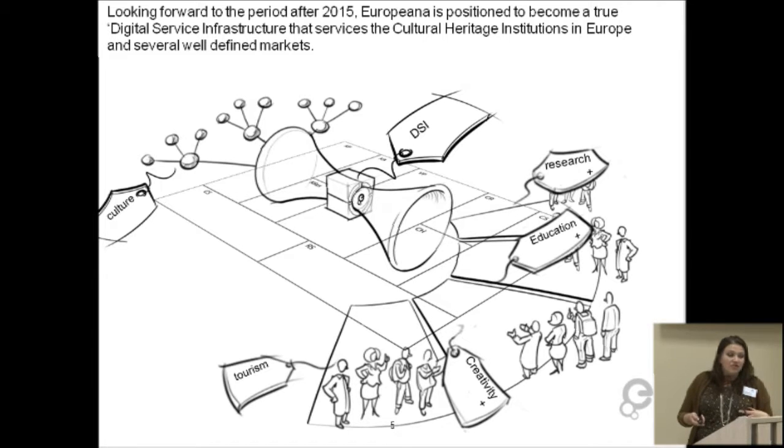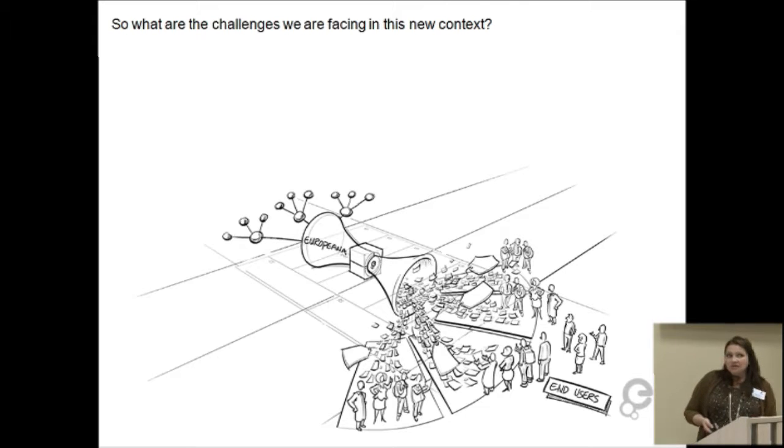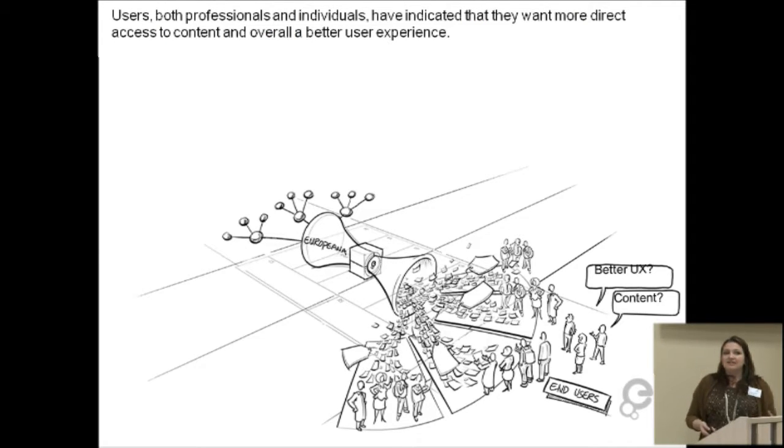We need to identify what the challenges are that we're facing. And one of the things that we do understand is that our users, the people who access the metadata, say that they need better and more direct access to the metadata and the content, and that they'd like a better overall user experience. I don't know how many of you have gone to the main portal, europeana.eu, and looked for a digital object, searching through the portal. It's great if you're looking for something specific, but if you're looking to download a large amount of metadata or access a range of digital objects, it has its limitations. And so we need to do more work on that. And the Europeana Cloud Project gives us the mechanism in which to do that.